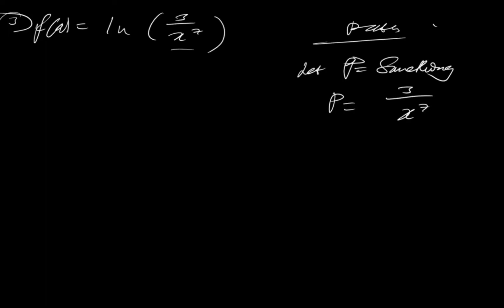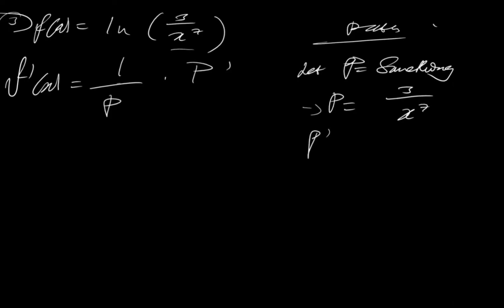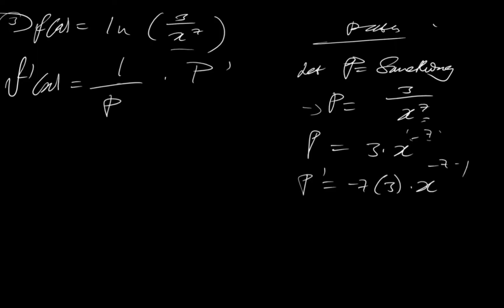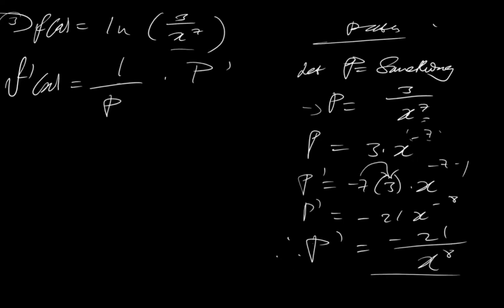Remember, the derivative of a function in the form ln(something) will always be 1 over something times the derivative of something. So f'(x) equals 1 over p times p'. I know what p is, but I don't know p', so let's find it. I can rewrite p as 3 times x to the minus 7. Then applying the power rule: p' equals minus 7 times 3 times x to the minus 7 minus 1. So p' equals minus 21x to the minus 8, which can be written as minus 21 over x⁸.